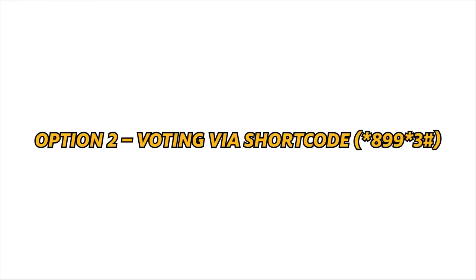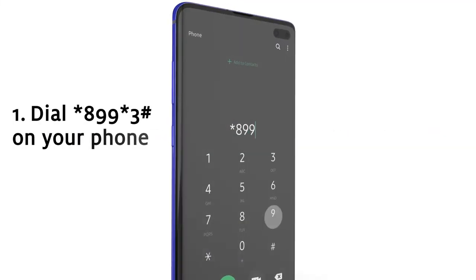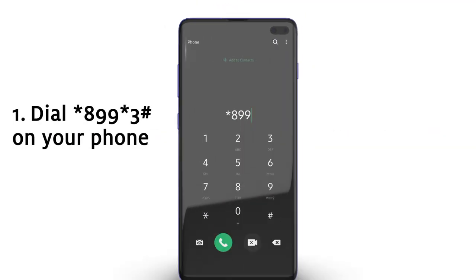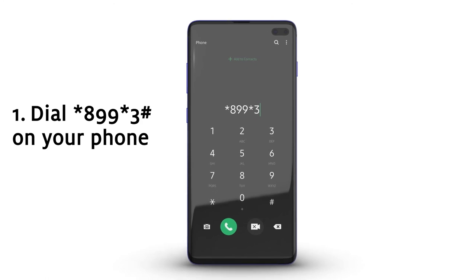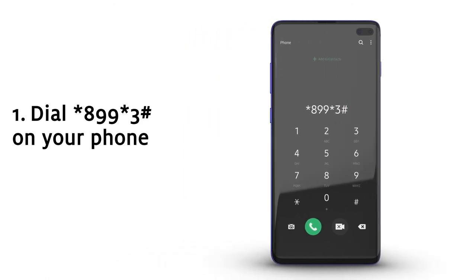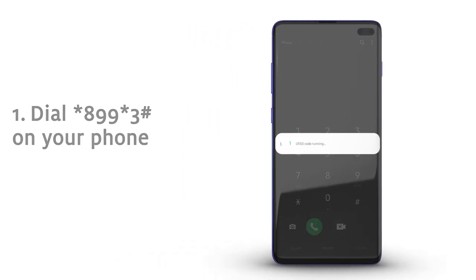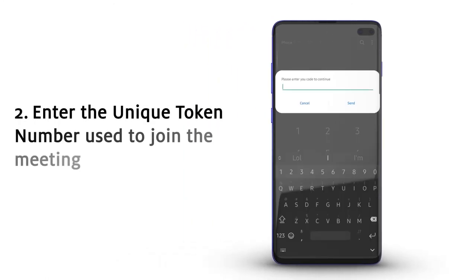Option two: voting via shortcode. Dial Star 899 Star 3 Hash on your phone. Enter the unique token number used to join the meeting.